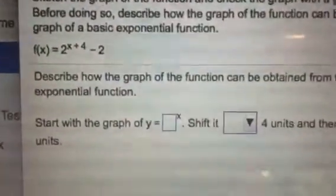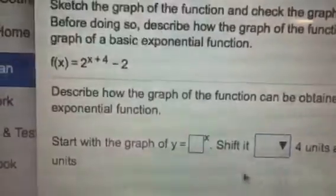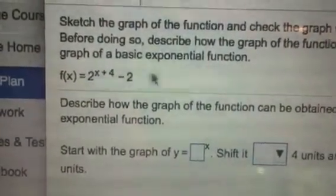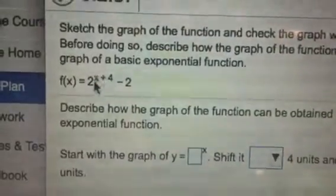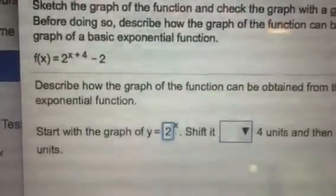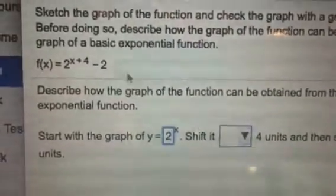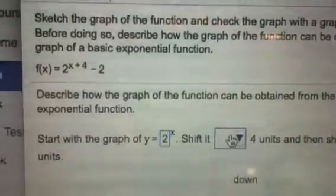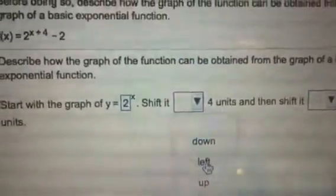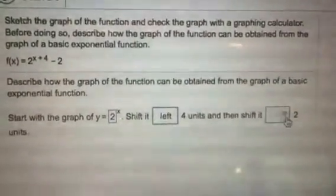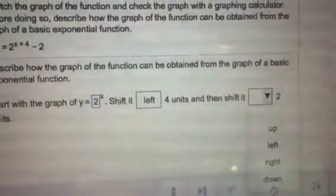This is even a better one because we've got several transformations. We're going to always start with whatever our base is. Our base, if we ignored all these transformations, our base is 2 to the x. So we're going to put in here, this is a base 2. We're going to go 4 units to the left. So let me say left 4 units. We're going to go down 2. So we're going to tell it we want to go down 2.